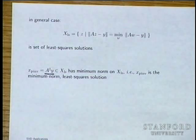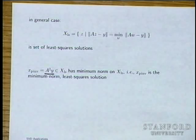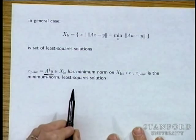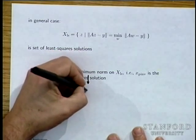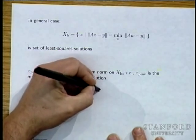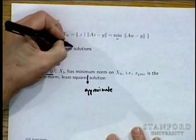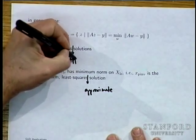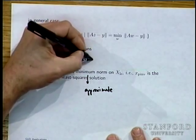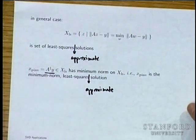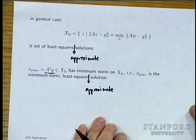X† = A† y is the minimum-norm, least-squares approximate solution. Calling it a 'least-squares solution' is a bit irritating — it's really an approximate solution, since the whole point is that it's not an exact solution.